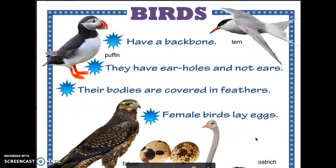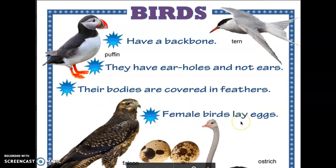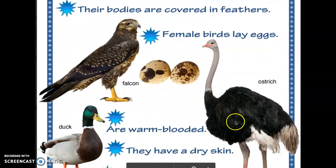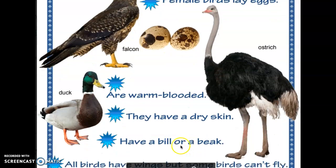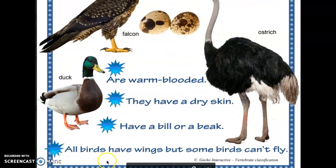Birds have a backbone, they have ear holes and not ears. Their bodies are covered in feathers. Female birds lay eggs. They are warm-blooded, they have dry skin, they have a bill or a beak. All birds have wings, but some birds can't fly.